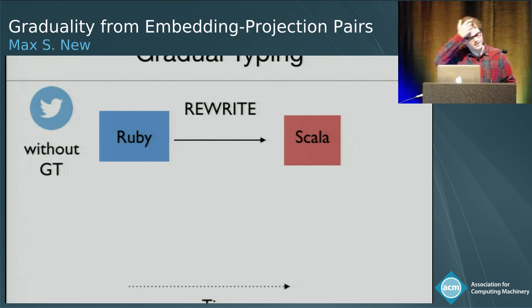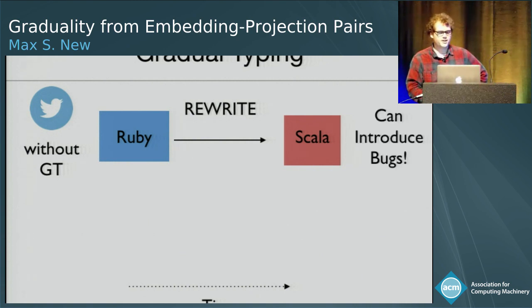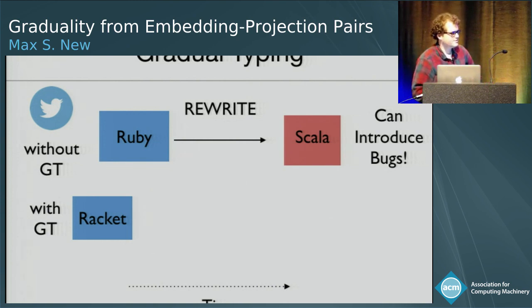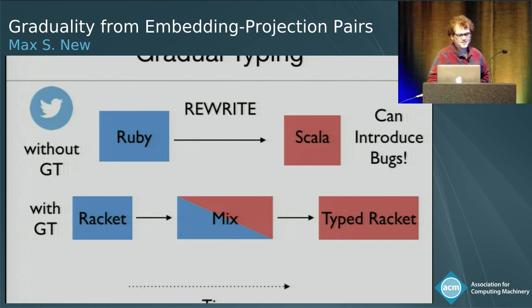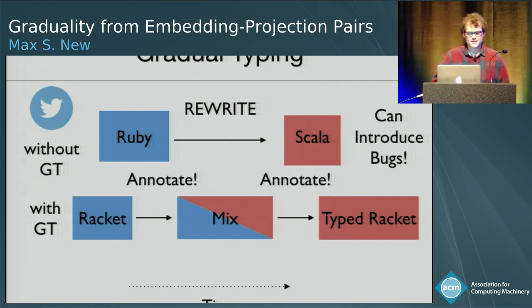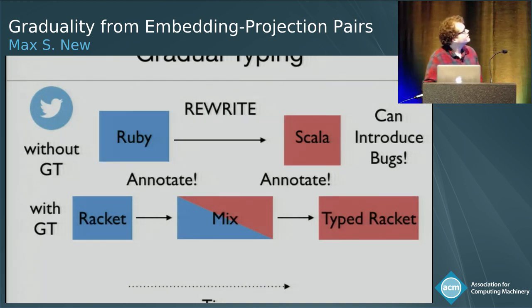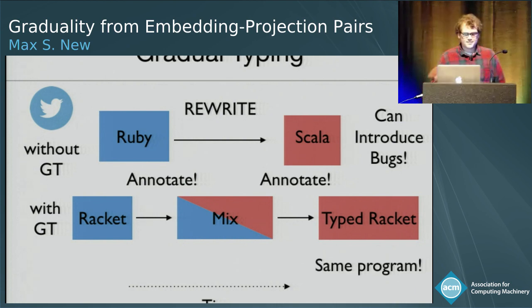That takes a lot of work, and in the translation process you can introduce bugs. Now compare that to your life with gradual typing. You would, of course, use a better language like Racket. And then gradually over time, you would be able to add type annotations to your program until you get a typed program. And not only is it easier to do, but it's the same underlying program, so you didn't introduce any bugs.